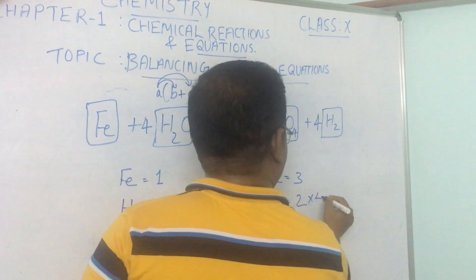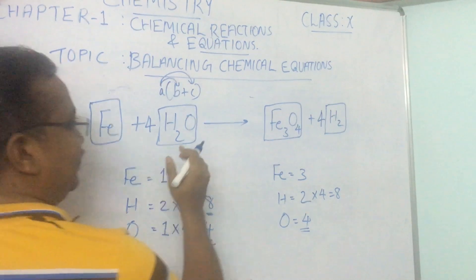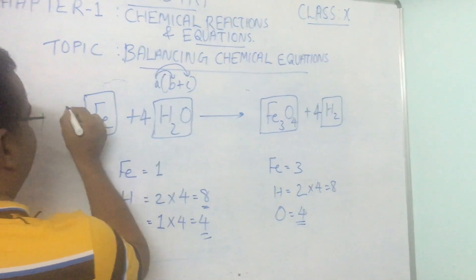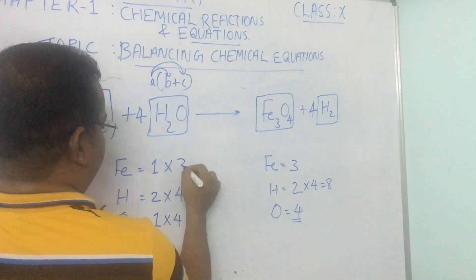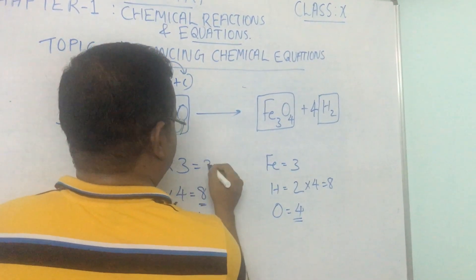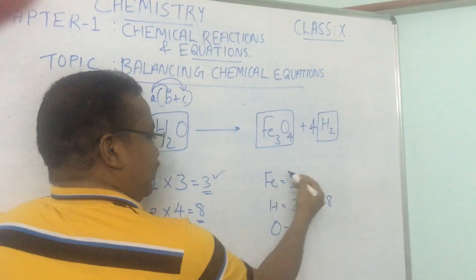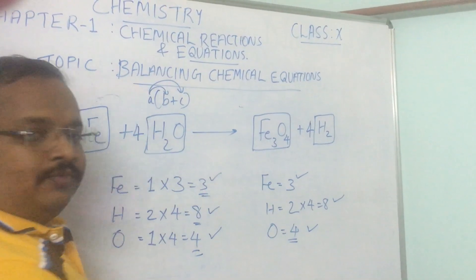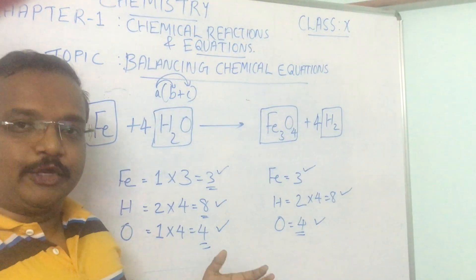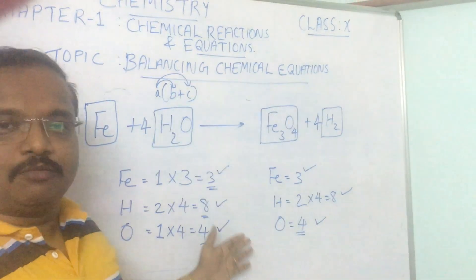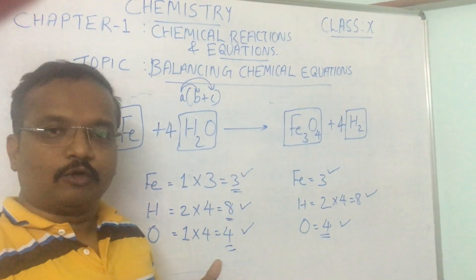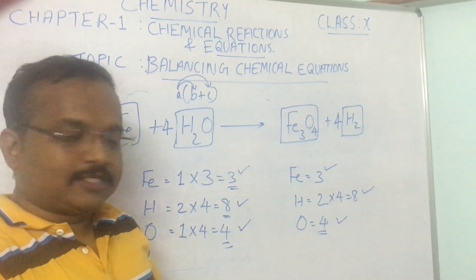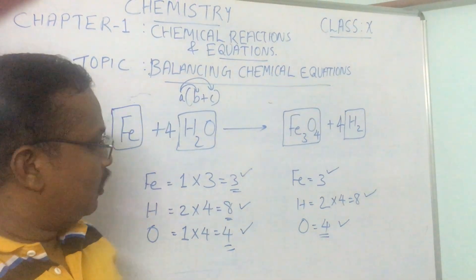Now what remains is iron. On the right hand side Fe₃O₄ has 3 iron atoms, but on the left there is only 1. So put coefficient 3 before Fe. Now iron is 3 on both sides, hydrogen is 8 on both sides, and oxygen is 4 on both sides — the chemical equation is fully balanced. These are three examples we have done. There are many more questions in the book, so please practice those. If you have doubts, put comments and send them to me — I will try to solve and reply. Thank you very much.